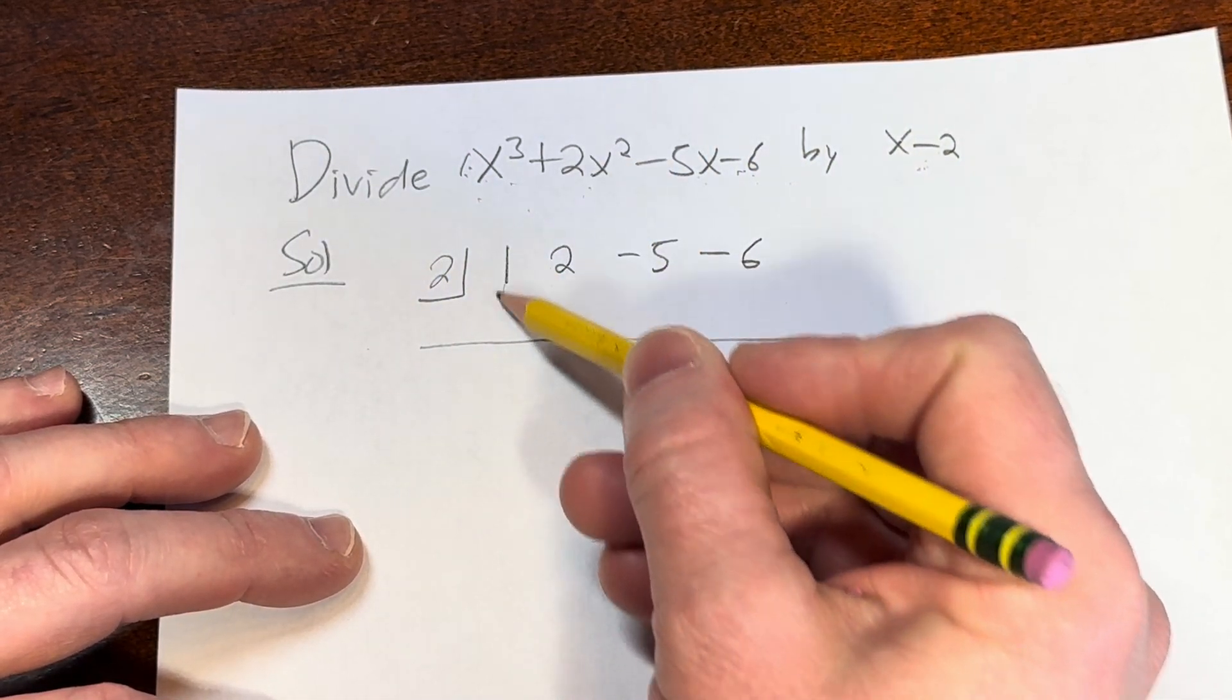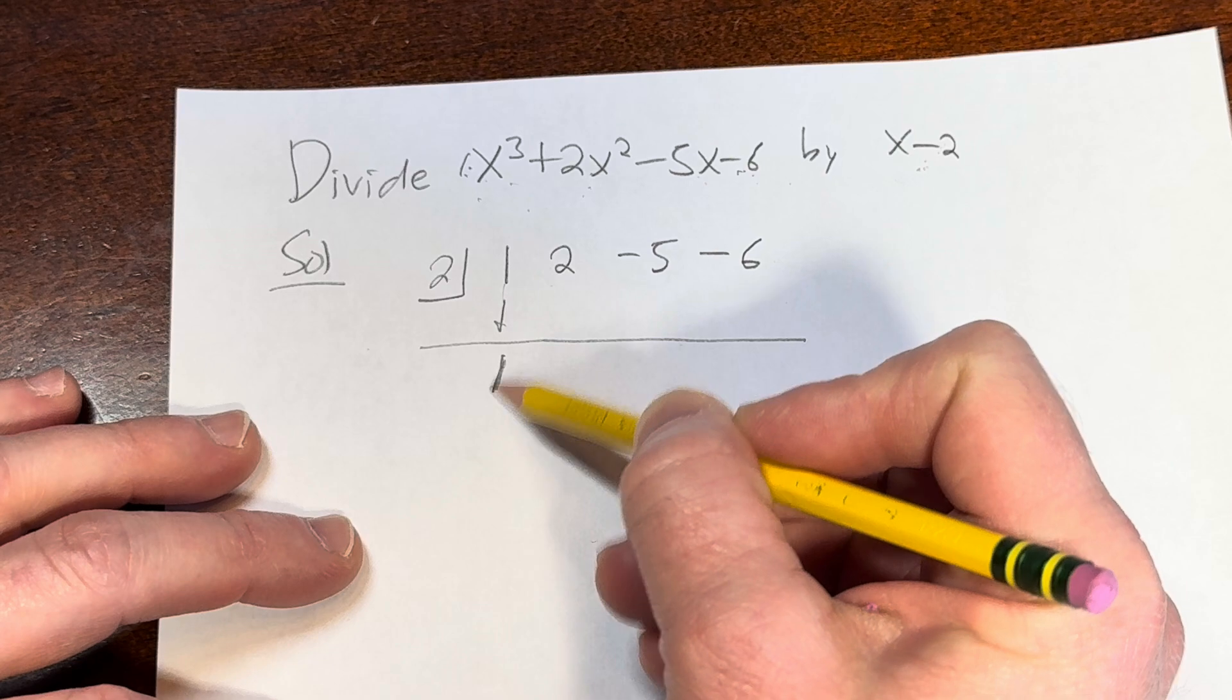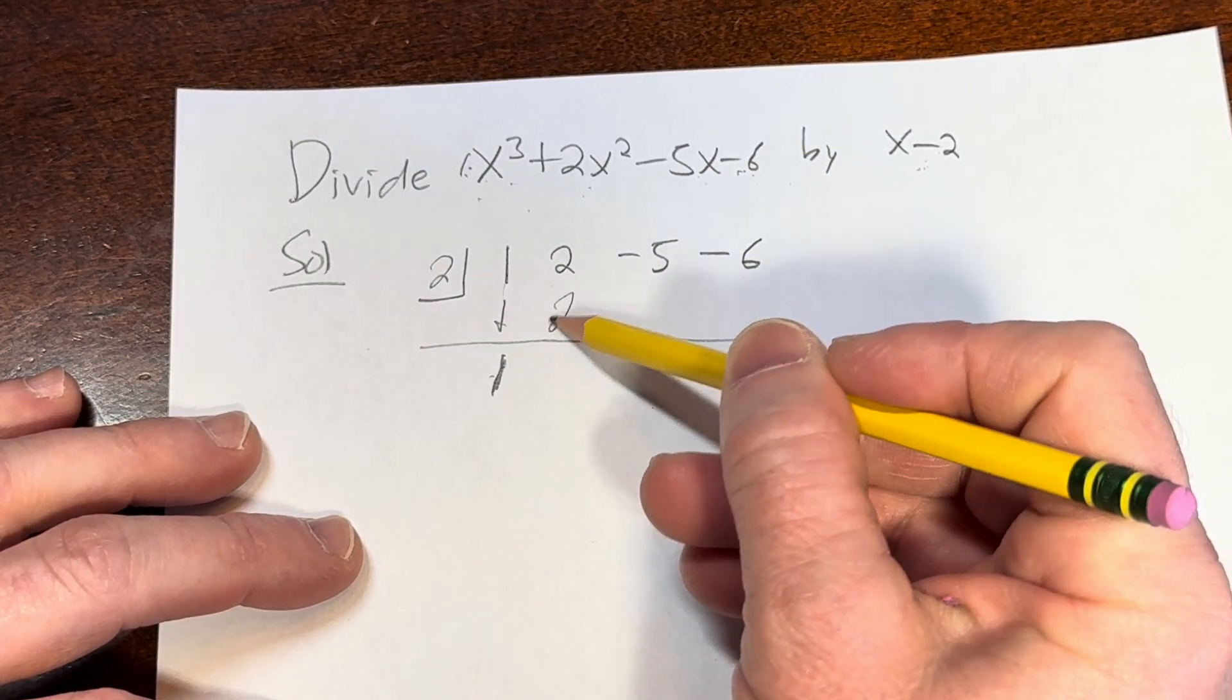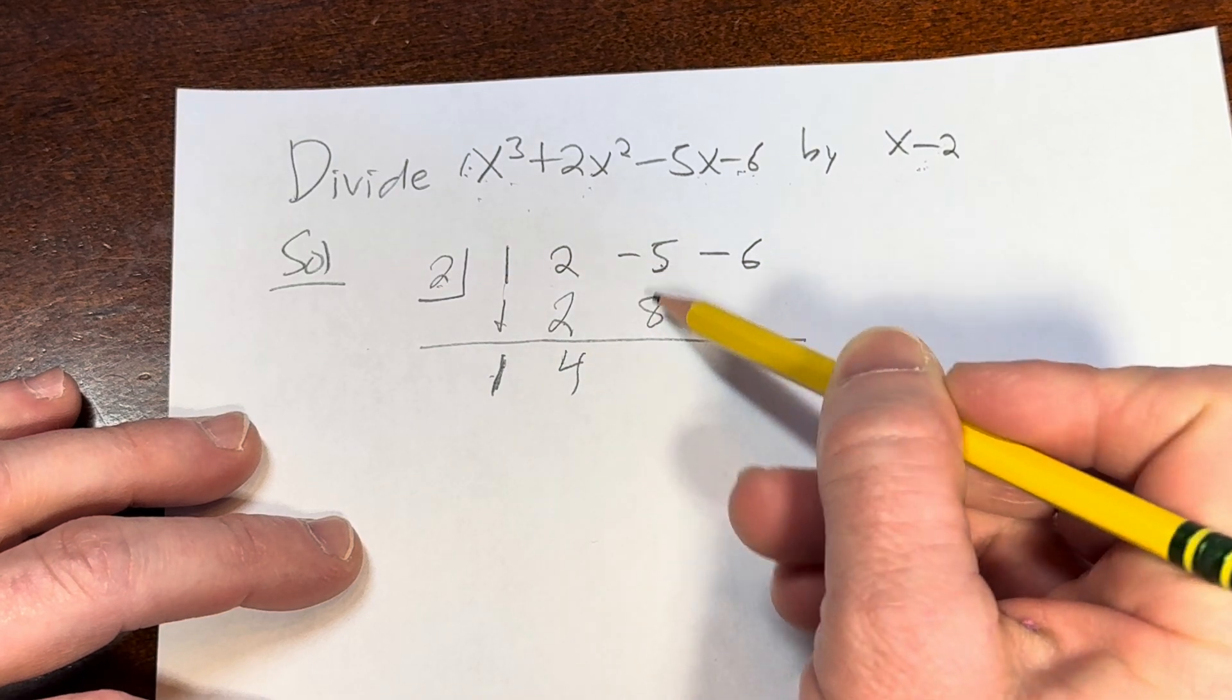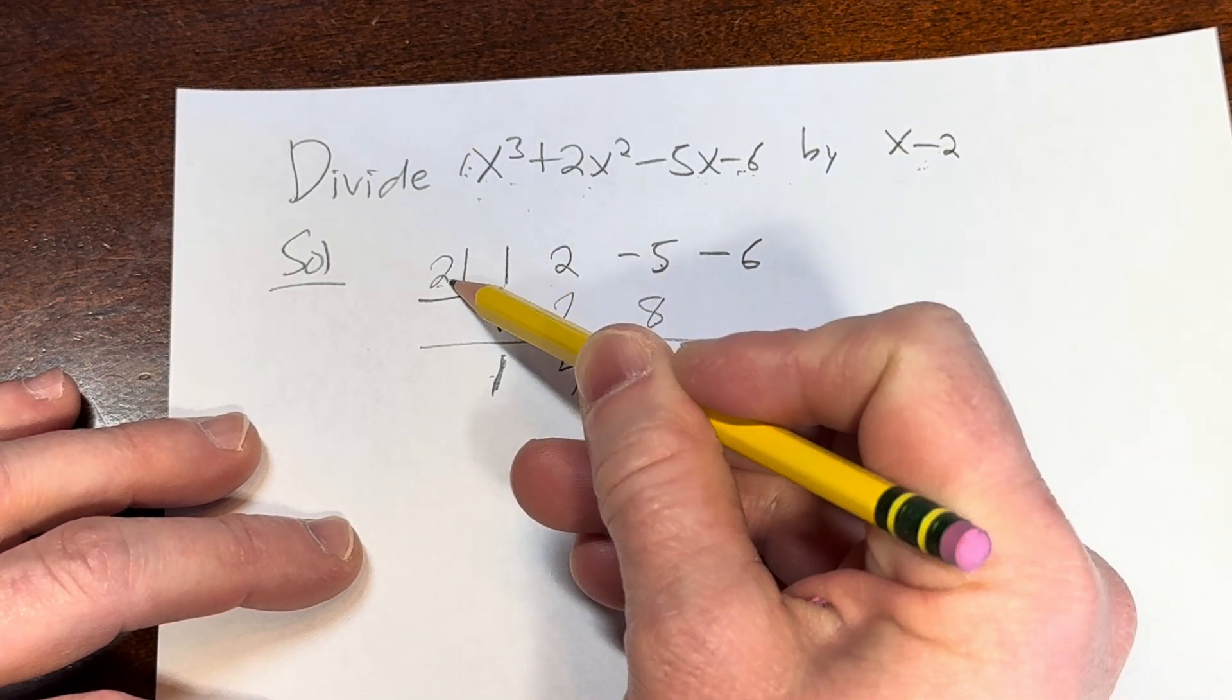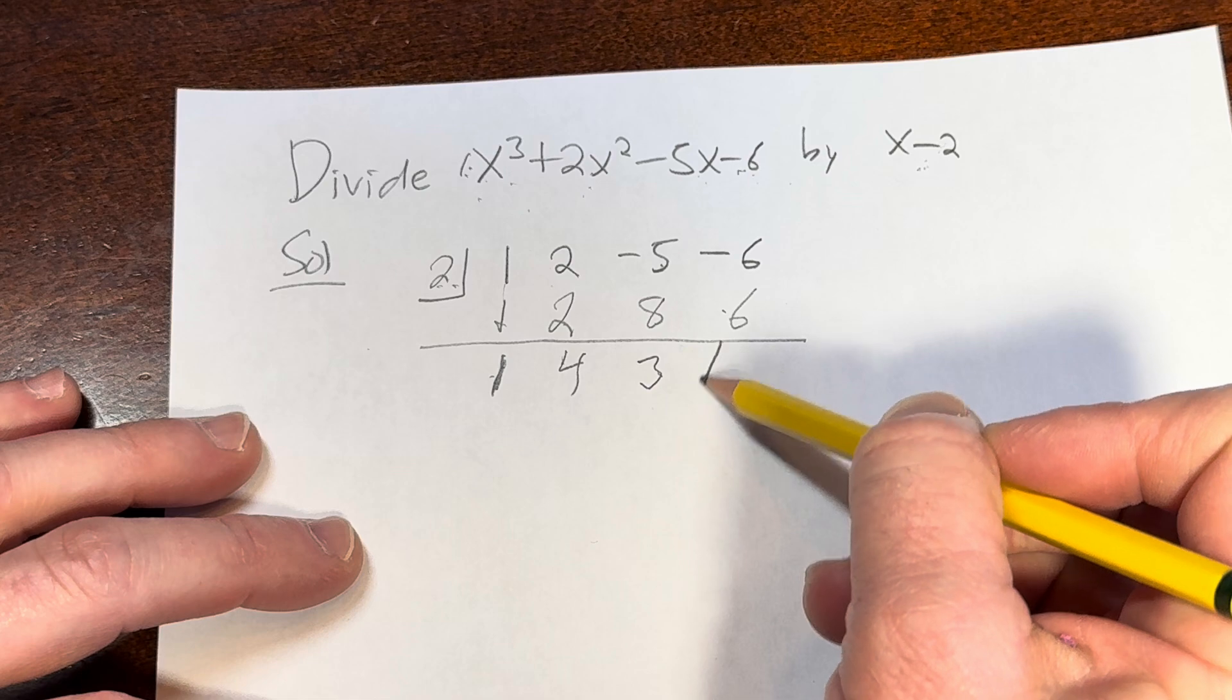The first thing you want to do is bring this number down, so you just bring it down, and then you multiply and add. 1 times 2 is 2, 2 plus 2 is 4, 4 times 2 is 8, negative 5 plus 8 is 3, 3 times 2 is 6, and then we add and we get 0.